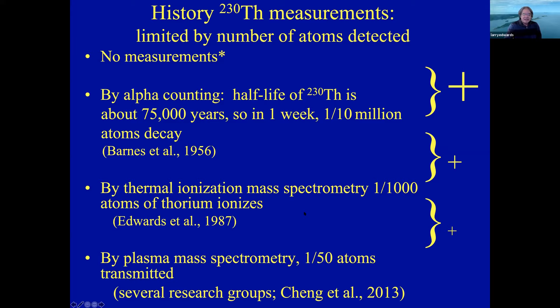Subsequent to that, inductively coupled plasma mass spectrometers came into play. In a plasma you're basically ionizing everything — so instead of one out of a thousand, you've got 100% ionized. But the problem is getting them into the mass spectrometer: you have a pinhole, you have to pump like crazy to maintain the vacuum, and most of the ions that enter get pumped out. By playing around with geometry and other factors we've gotten to one out of 50, so there's another factor of 20 improvement over the last few decades.